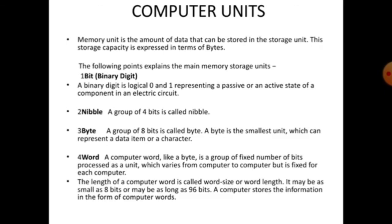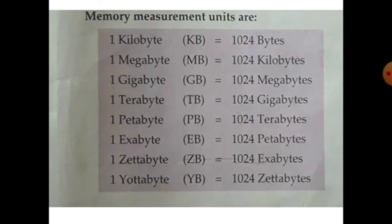Here you can see memory measurement units. 1 kilobyte equals 1024 bytes, 1 megabyte equals 1024 kilobytes, 1 gigabyte equals 1024 megabytes, 1 terabyte equals 1024 gigabytes, 1 petabyte equals 1024 terabytes, 1 exabyte equals 1024 petabytes, 1 zettabyte equals 1024 exabytes, 1 yottabyte equals 1024 zettabytes. This is a very important chart for upcoming further studies of memory in senior classes.